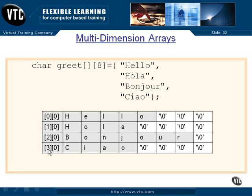And then 'ciao' — we have 3 times 8, which is 24, added to greet, and that gets us to the address of the C. We read until we hit a null, and that's a valid string.